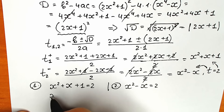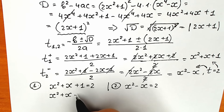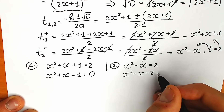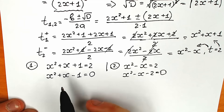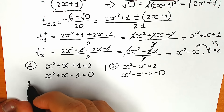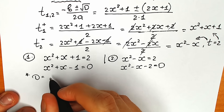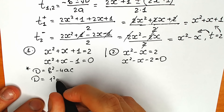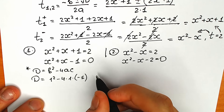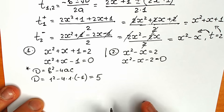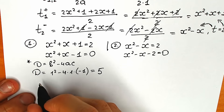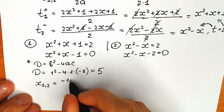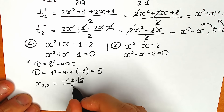We now have two quadratic equations. Starting with the first: x² + x + 1 = 2 gives x² + x − 1 = 0. The discriminant equals 1² − 4(1)(−1) = 1 + 4 = 5. So x₁,₂ = (−1 ± √5) / 2. We have two real roots.